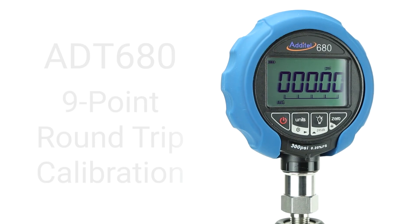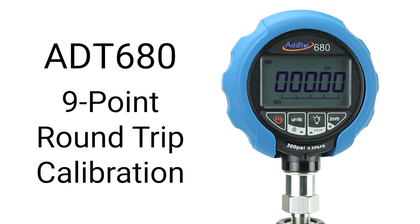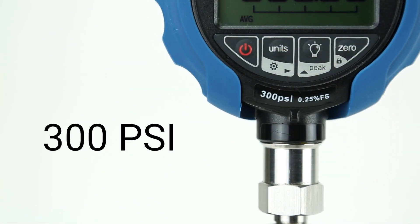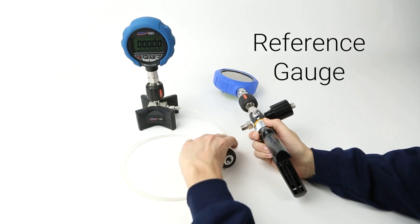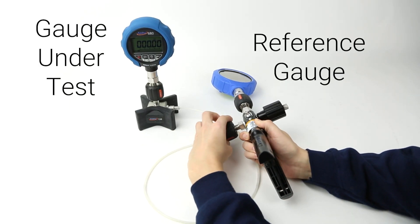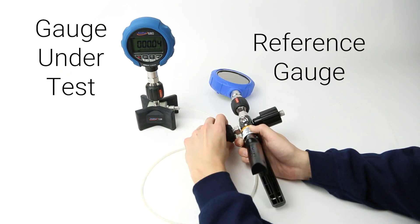The device under test for the calibrations will be an Adytel 680 digital pressure gauge with a range from 0 to 300 psi or 20 bar. For the first calibration, we'll connect the hand pump and reference gauge to a manifold with the gauge under test using Adytel quick connectors.